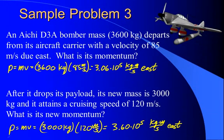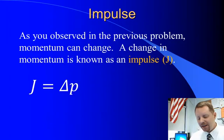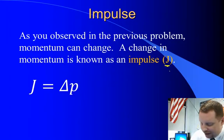Pretty straightforward. Now, as you observe in this problem, momentum can change, and we call a change in momentum an impulse. That is given the symbol J, and all it is, is delta P. J equals delta P.